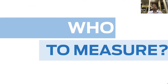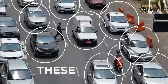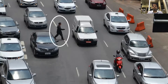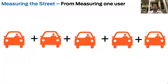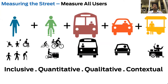After understanding what to measure, it's important to consider who to measure, because traditionally we have measured the number of cars that pass through an intersection — but we often forget about the people walking on those streets, the cyclists, the people taking transit, the people walking to work. We need to shift from measuring only one user to becoming much more inclusive, quantitative, qualitative, and contextual about our metrics and evaluation systems.